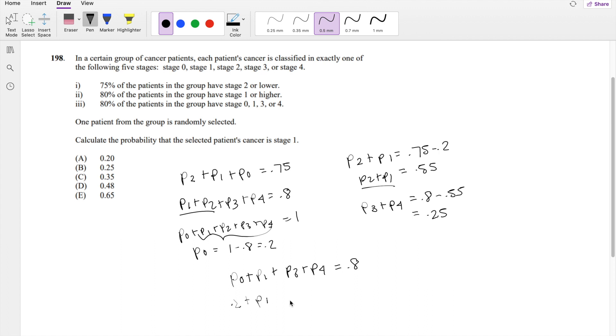Probability of stage 1 is what we're looking for. Stage 3 and stage 4, we know is 0.25, equal to 0.8. So the probability that they're in stage 1 is equal to 0.8 minus 0.25 minus 0.2, which is equal to 0.35.